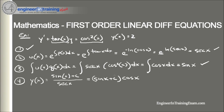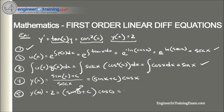We have an initial value so let's plug it in. y(0) = 2 gives sin(0) + C·cos(0) = 2, so 0 + C·1 = 2, therefore C = 2. Our particular solution is y(x) = sin(x) + 2cos(x).